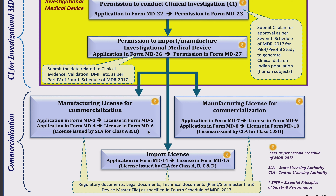For Class C and D manufacturing license, I need to apply in form MD7, and the CLA — Central Licensing Authority — is going to issue the license in form MD9. In the case of import for Class C and D, I need to apply in form MD8, and CLA will issue in form MD10. Please note that CLA controls the import license regulation for all kinds of medical devices — Class A, B, C, or D — and for import license, I need to file MD14, and CLA will issue in form MD15.